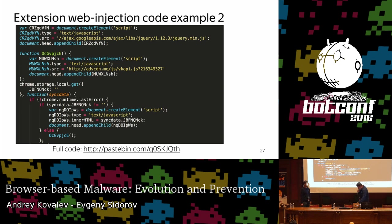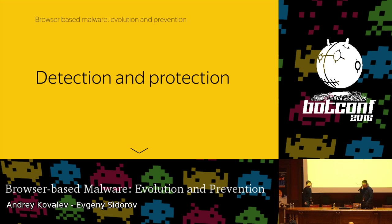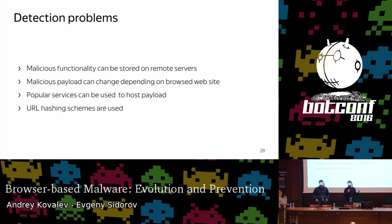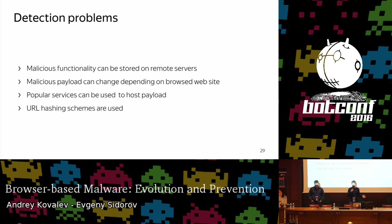We've discussed the examples. Let's go to the detection and protection methods — and now I want to give the floor to my colleague Evgeny. Thank you, Andrei. Let's discuss some detection and protection techniques. Before I start describing detection techniques, I want to highlight some detection problems. As Andrei said, malicious functionality can be stored on remote servers, so a malicious extension can change its behavior during its lifetime, which is why malicious extensions can bypass some moderation processes.